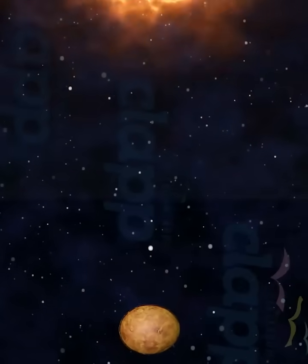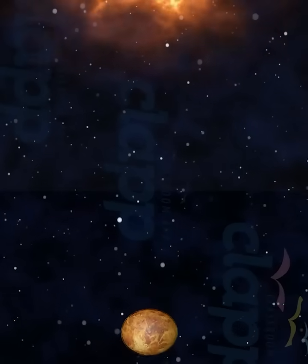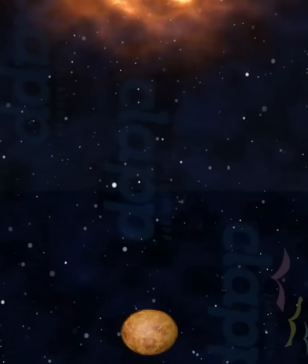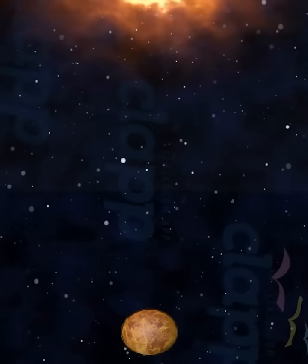Venus is an average distance of 108 million kilometers away from the Sun. From this distance, it takes sunlight 6.1 minutes to travel from the Sun to Venus.